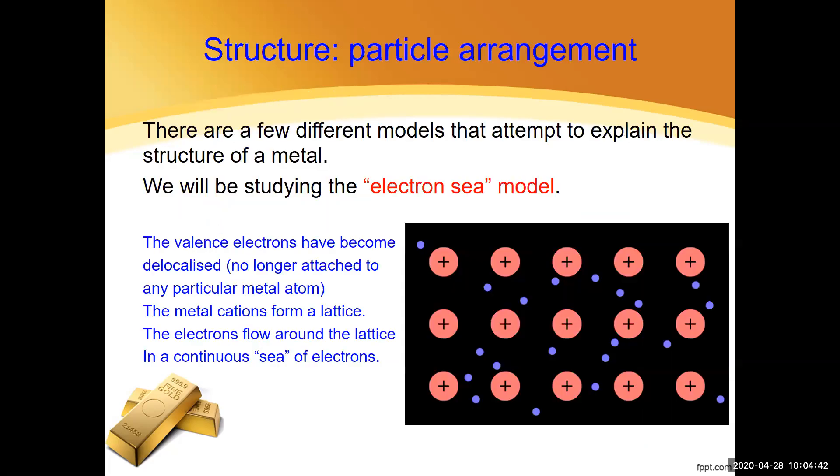Let's talk about metallic structure. Remember, structure is the arrangement of particles. There are a few different models that attempt to explain the structure of metal, but the one we're going to be studying is called the electron sea model. In the electron sea model, the metal atoms have all lost their valence electrons and become metal ions. The positive circles in the diagram represent the metal ions, the cations, and the electrons become delocalized.